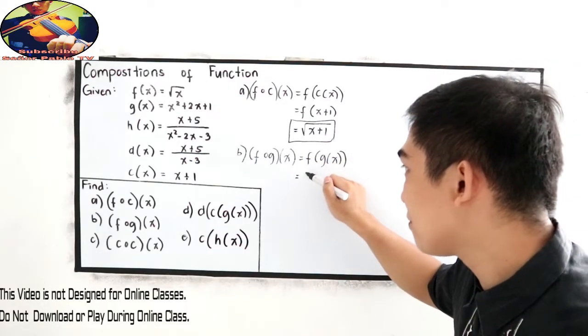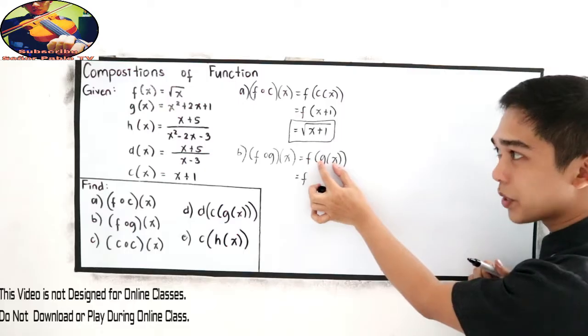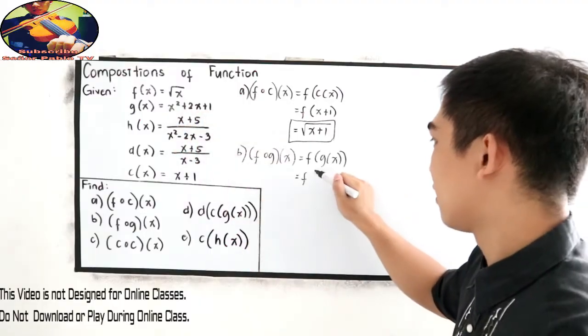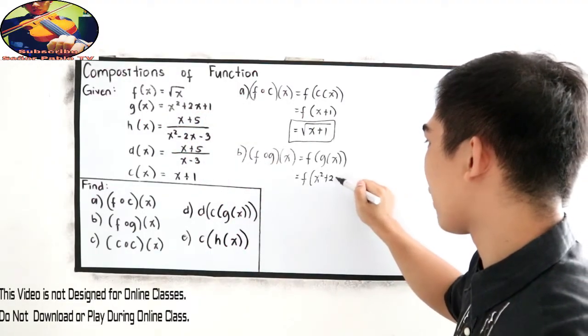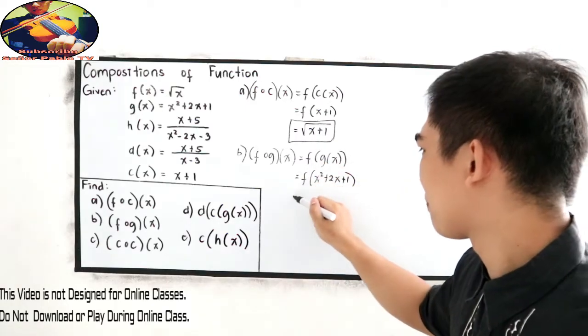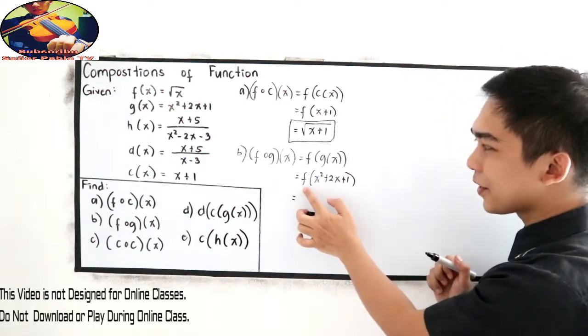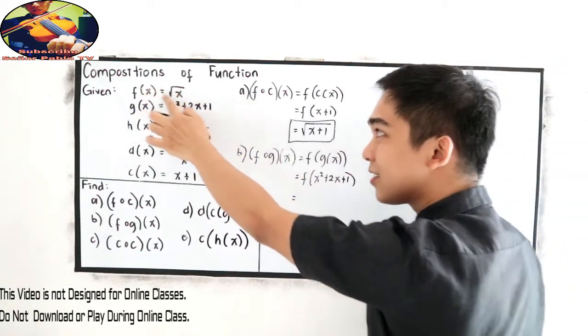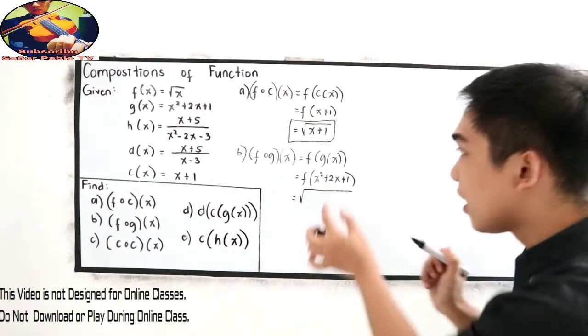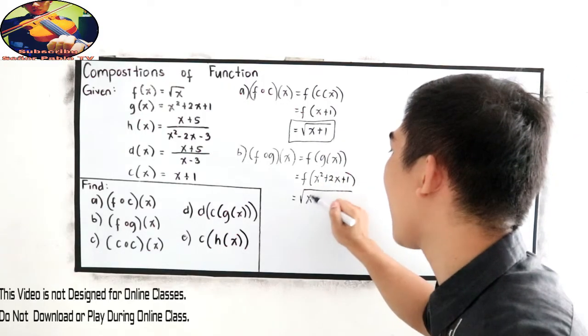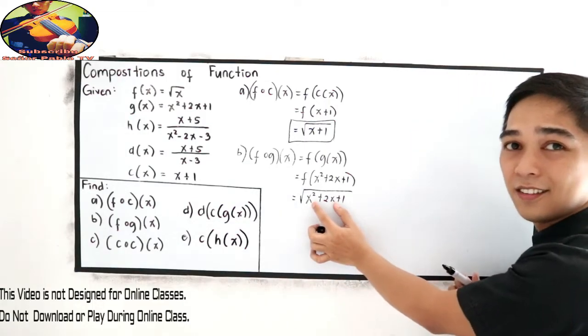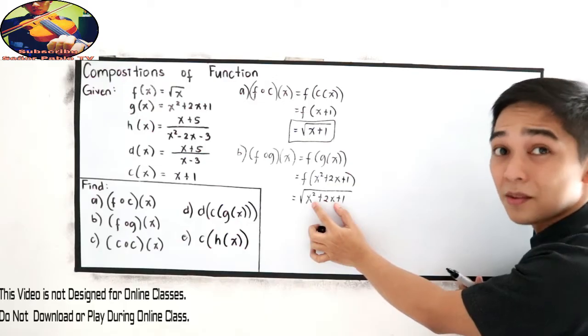So copy f, then copy g of x. Where is g of x? g of x, so copy x squared plus 2x plus 1. Okay, substitute. Next, where is f of x? Here, the equivalent of f of x is square root of x. So square root of our x is x squared plus 2x plus 1. Can you see the relationship now? This substitute.